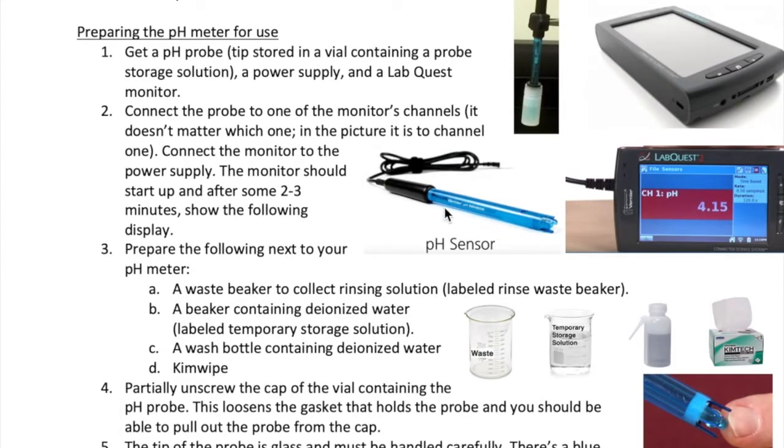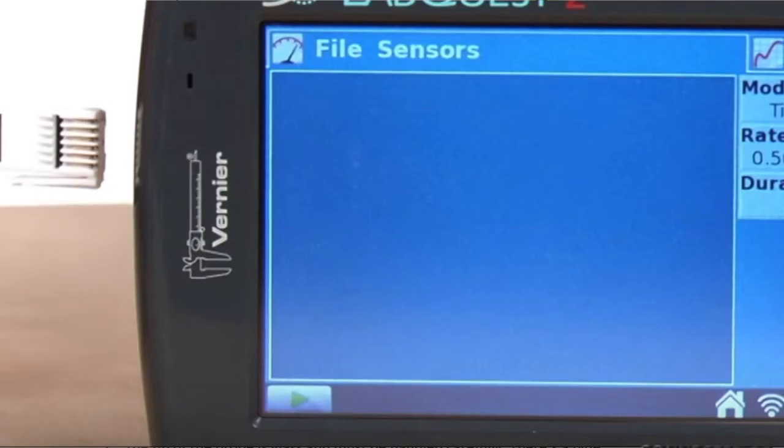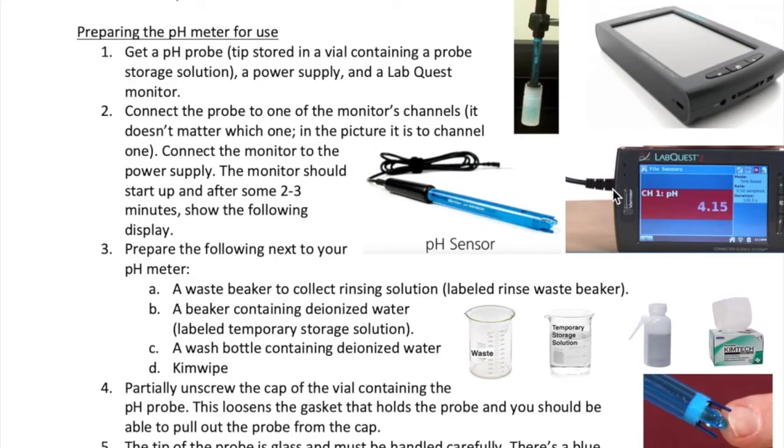You'll also get a LabQuest monitor and then its power supply. You'll connect the pH probe cable to the monitor on the side as shown here. There will be three channels that you can connect the probe to. It doesn't really matter which channel you choose. You will then connect the monitor to the power supply and plug the power supply in. The monitor will start up.